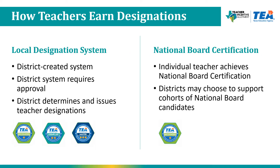There are two pathways through which a teacher can earn a designation. The first is through their district's local designation system, where a district creates a local system to identify and designate their high-performing teachers, requiring a two-step application and approval process through TEA. The second pathway is through national board certification, which does not require a local designation system. Individual teachers who are classroom teachers and nationally board certified can earn an automatic recognized designation through TEA.